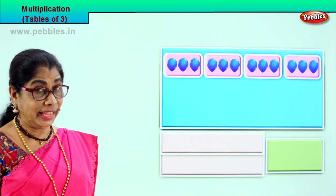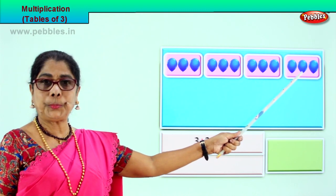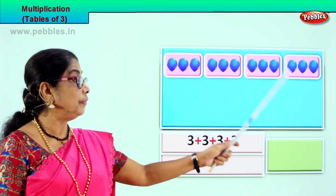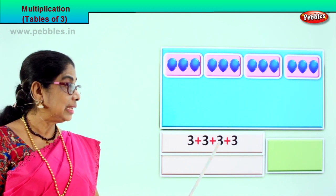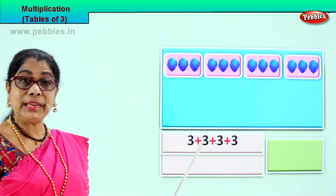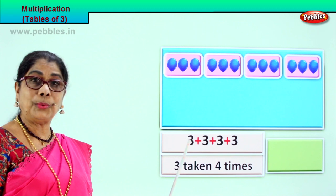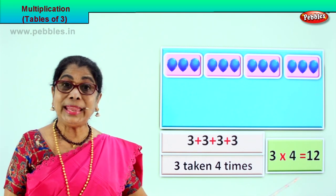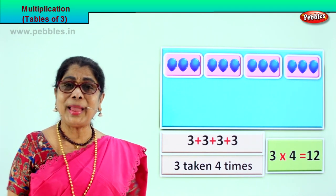Shall we get another grouping of three? Look what we have — how many groupings of three? One, two, three, four. Multiplication, repeated addition. Three plus three is six, six plus three is nine, nine plus three is twelve. Three taken four times. Three fours are twelve. Three into four is twelve. We read it as three fours are twelve.